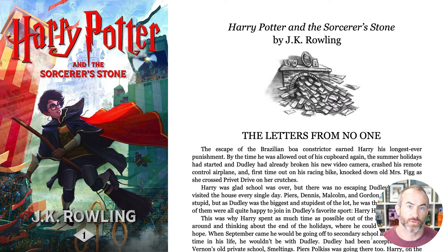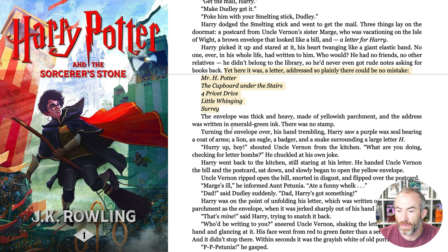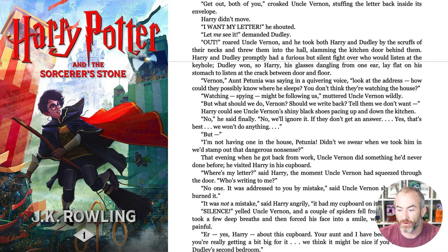Instead of just telling you what it is, let me show you inside a scene from Harry Potter and the Sorcerer's Stone — from the chapter 'The Letters from No One.' The inciting incident of this scene is when Harry gets a letter addressed to him for the very first time, and out of this inciting incident comes the object of desire: Harry wants to open the letter. As we read through this, we see that for the rest of the scene Harry is trying to get his hands on the letters addressed to him — he knows they belong to him.